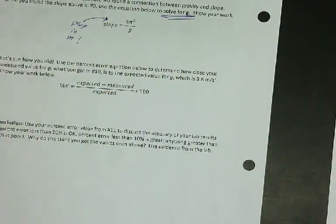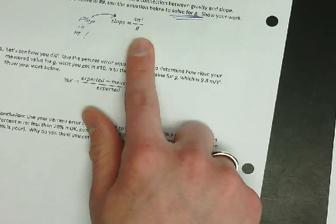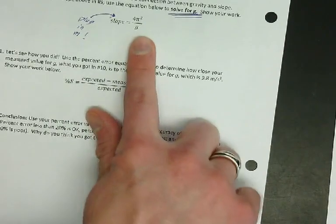You're saying to yourself, but Mr. B, g is 9.8. Yeah, I know g is 9.8. I want you to prove that to me. Show me that your lab gave you the same value. Solve for g and see what you get.